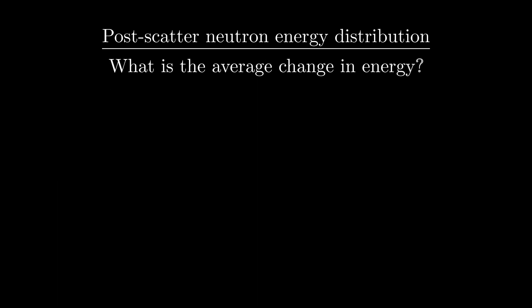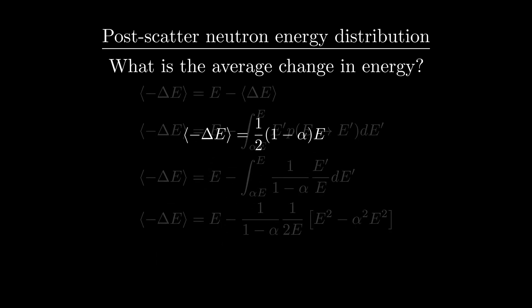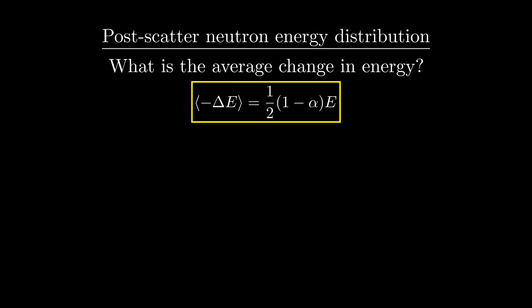With this probability density function, we can calculate the average loss of energy for a neutron during a scattering event. This is just equal to the initial energy minus the average post-scatter energy, and since we have this probability density function, we can calculate its mean value by simply integrating E times that function over the function's whole domain. So we do a little algebra, and we end up with the result that the average loss in energy is 1 half times the quantity 1 minus alpha times E, which is right in the middle of our uniform distribution as expected.